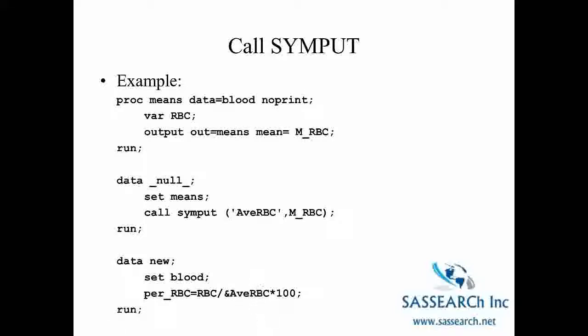What's interesting here is we never once looked at the output to determine what the actual average red blood cells were. We didn't have to figure out that number and put that number in this equation. We were able to do all of this communication between these data steps with the use of call SYMPUT which created this global macro variable.